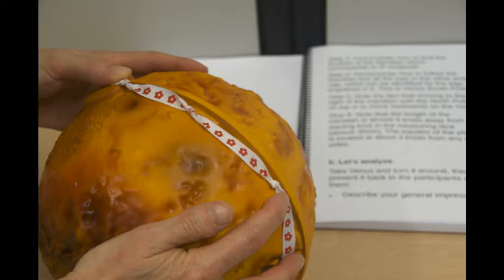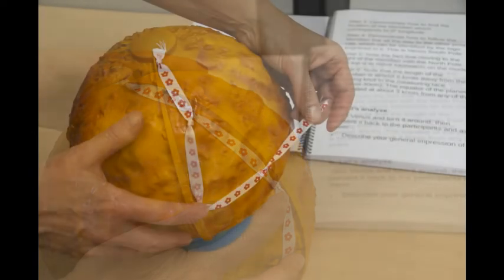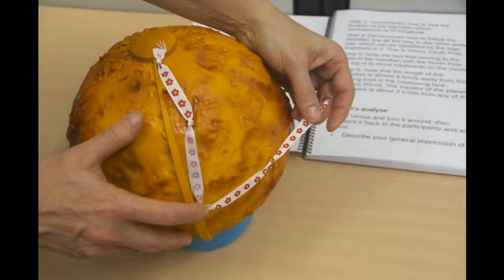It also establishes some conventions. For example, moving east is moving towards the right of the meridian with the north pole on top.